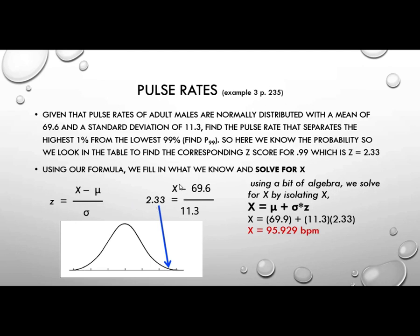So the part we're missing is x. We're looking for x. So we know this piece. We know this piece. We know this piece. We do a little bit of algebra, and we solve for x by isolating x. x is equal to mu plus sigma times z. Plug it in, and we find that the score for which 99% of the people, the lowest 99% fall is at 95.9 beats per minute. Anybody beyond that is 1%.